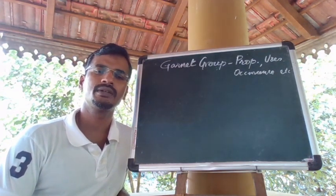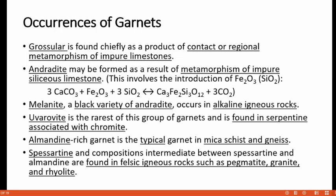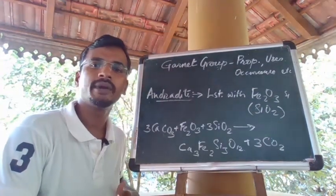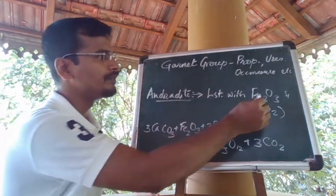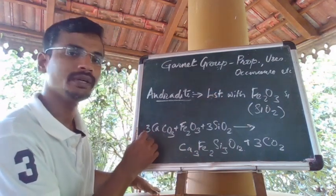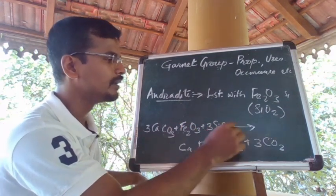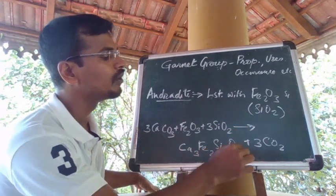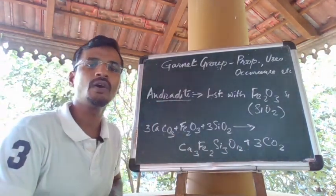Spessartine occurs in skarn deposits as it yields from various reactions with carbonate-bearing host rock. Grossular is found chiefly as a product of contact or regional metamorphism of impure limestone. Andradite may be formed as a result of metamorphism of impure limestone containing silica, involving the introduction of Fe2O3 and silica, yielding andradite: CaCO3 + Fe2O3 + SiO2 → Ca3Fe2Si3O12 + CO2.